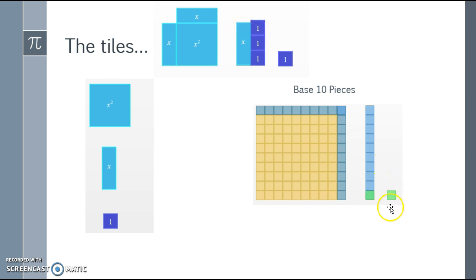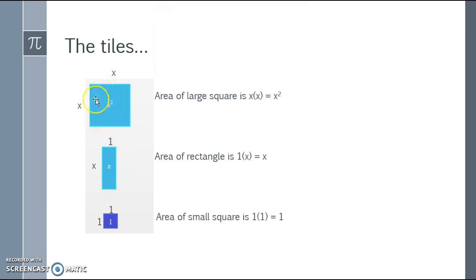So that's the difference. Whereas our unit, if we put 10 of them together, gave us a long, I cannot put units together to make an x—that just simply is impossible. The area of our x squared tile is an x times an x, which is x squared. The area of a rectangle is the length of x by the length of 1, or just simply x. And the area of the small square is a 1 by 1, which is 1.